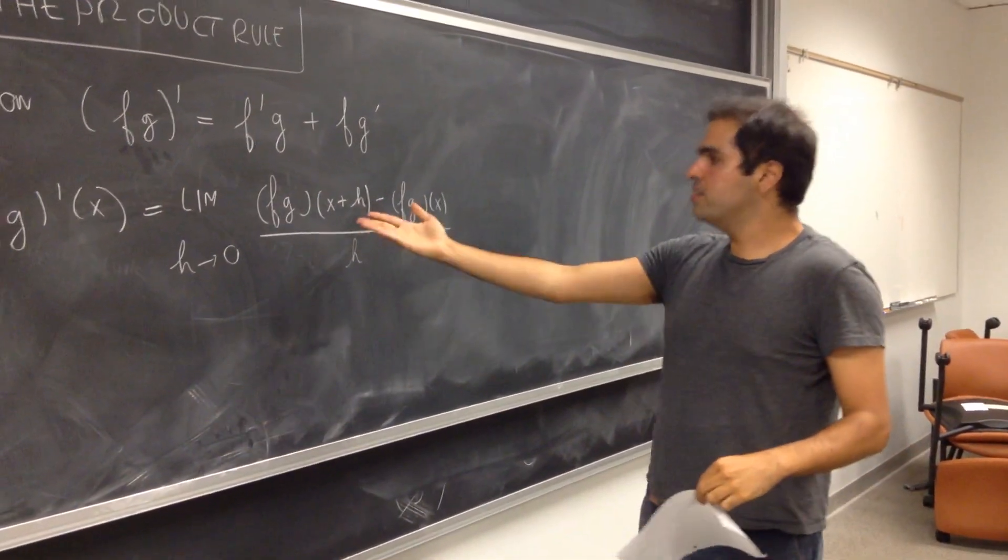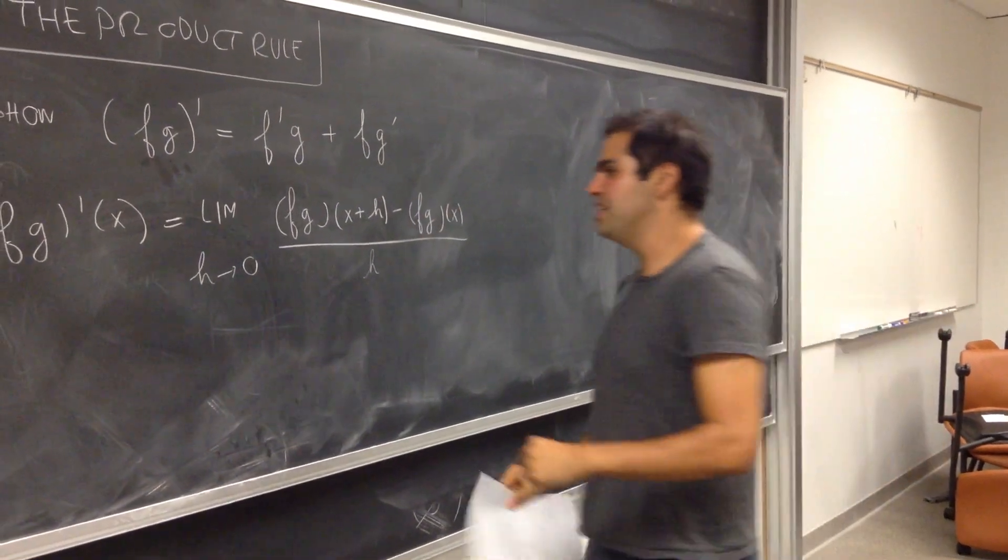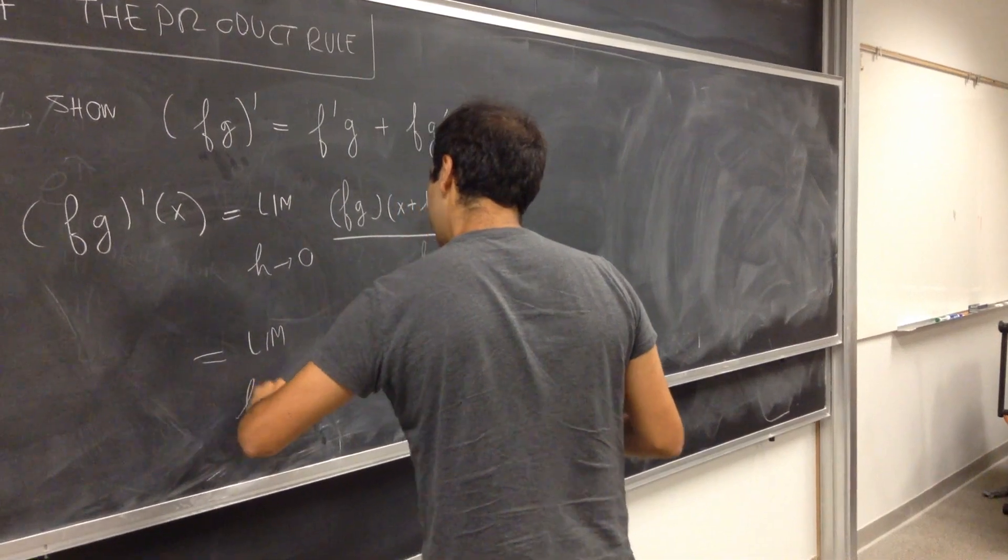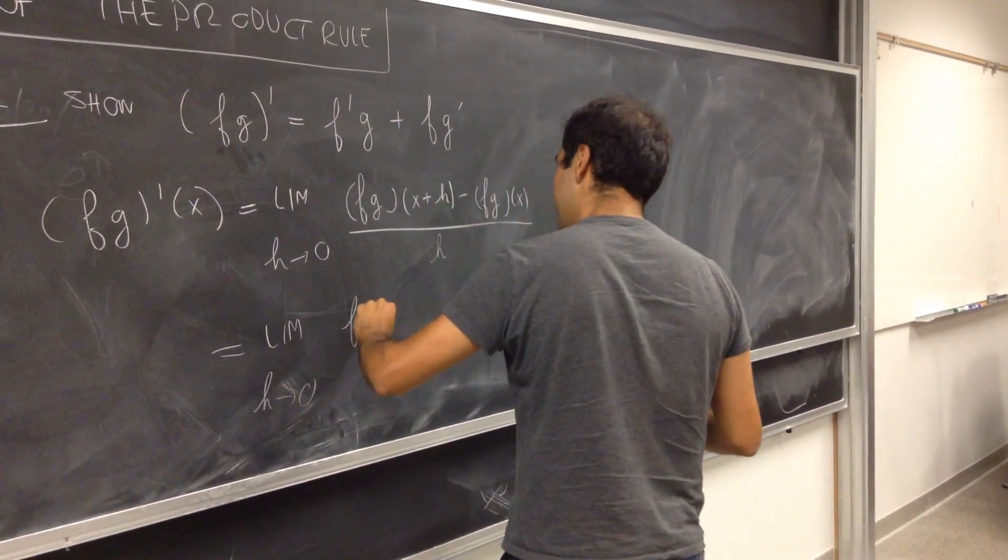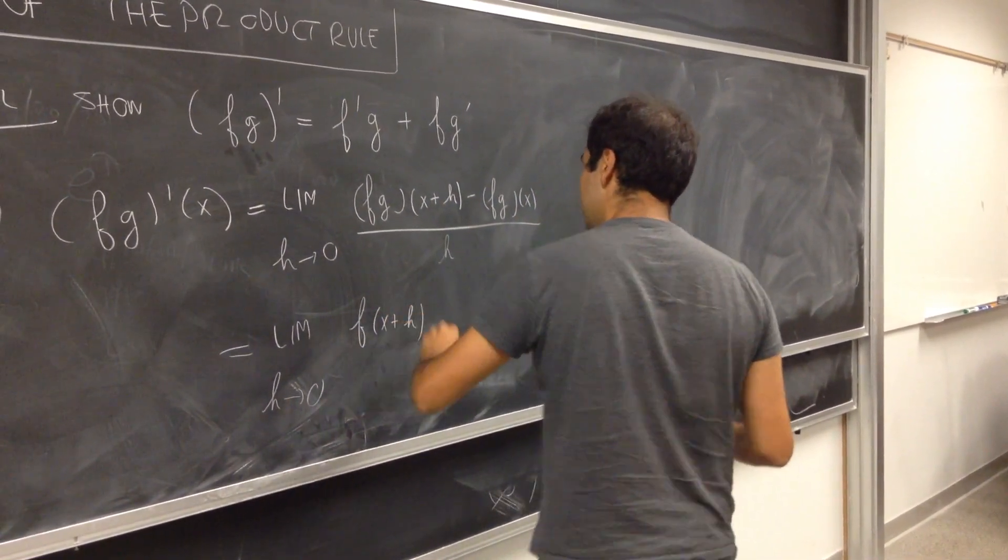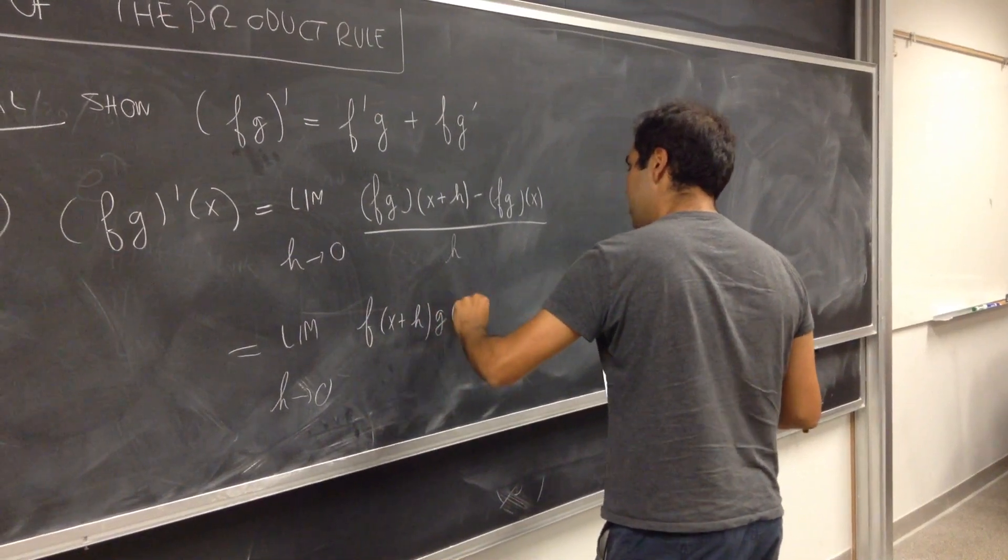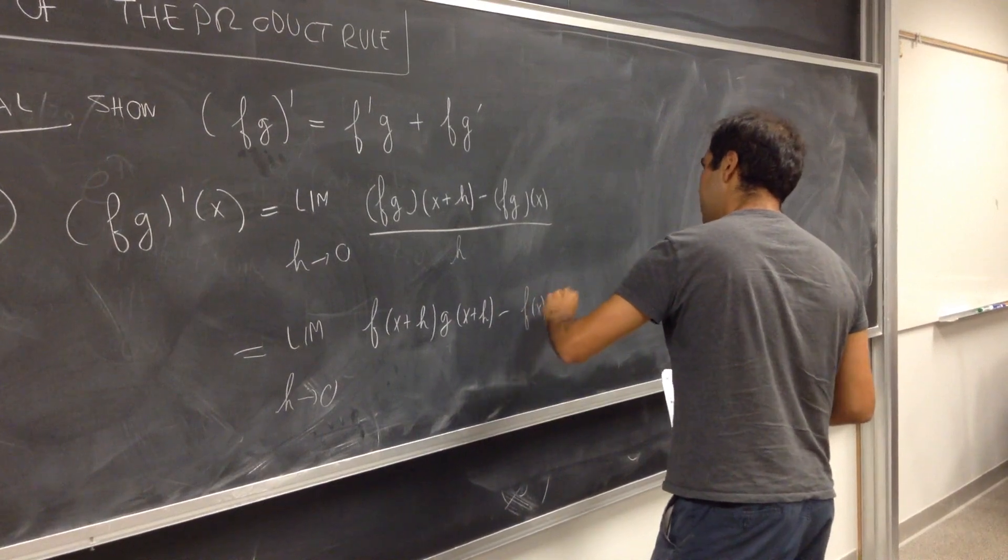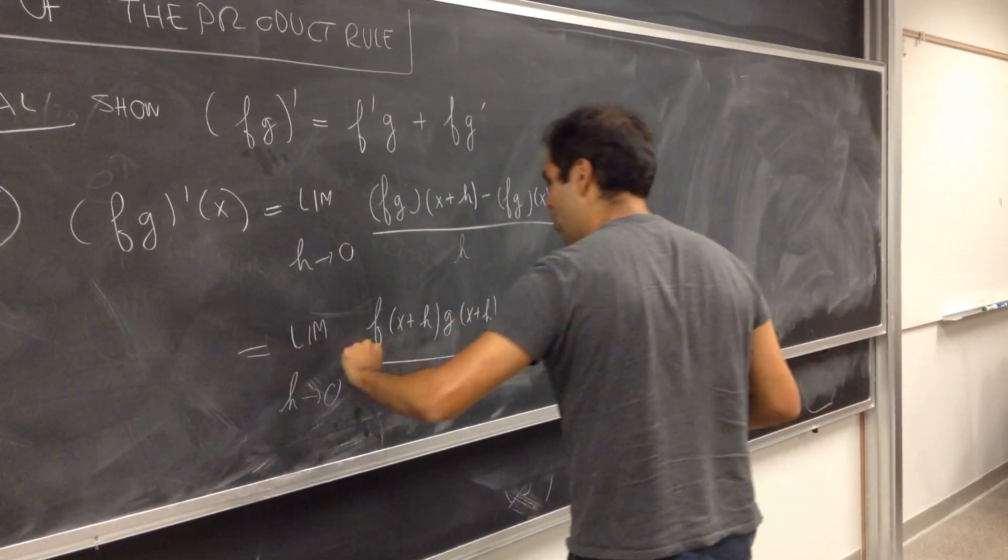But what does it mean to be fg? It means it's literally f times g. So limit h goes to 0: f of x plus h times g of x plus h minus f of x times g of x over h.